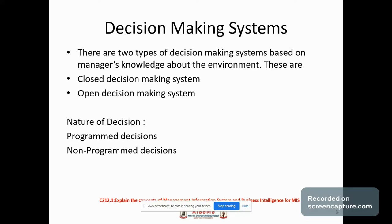Step number six is to select the best alternative. Step number seven is to execute the decision. Step number eight is to evaluate the results — evaluate the outcomes of your decision and see whether there is anything you should learn and then correct in future decision making. This is one of the best practices that will improve your decision making skills.